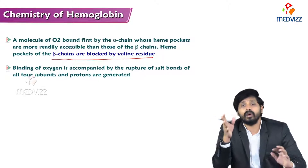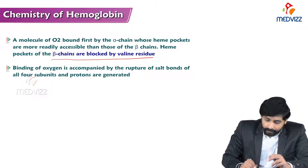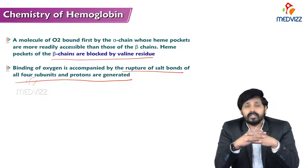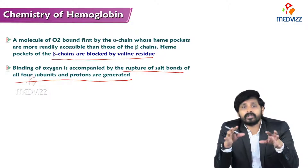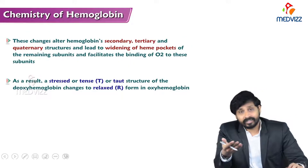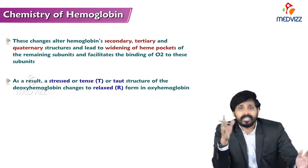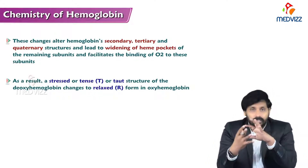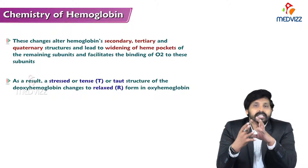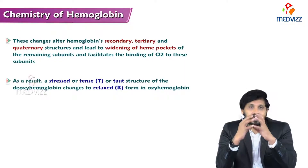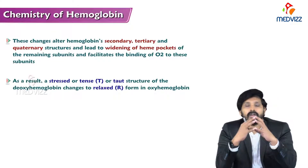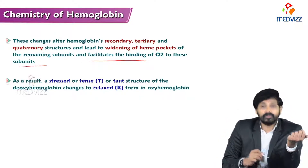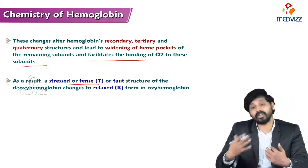Binding of oxygen is accompanied by rupture of salt bonds on all four subunits, and protons are generated. These changes alter the hemoglobin secondary, tertiary, and quaternary structures, leading to widening of the heme pockets. When oxygen binds to the alpha chain, the heme pockets widen, and the remaining subunits facilitate binding of O2 to the rest of the subunits.